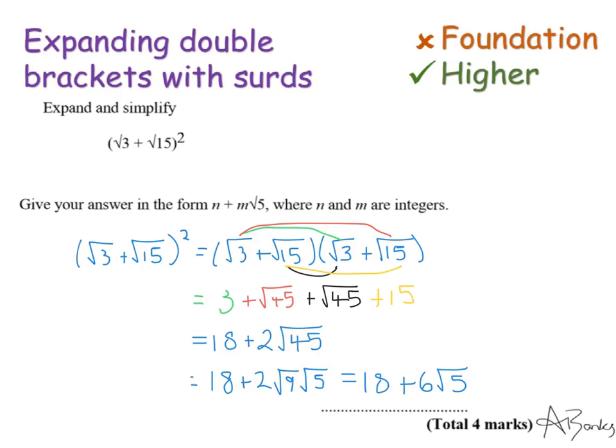If you're not sure what I've done in this step here, then I recommend you watch my video on simplifying surds, because that's the method I've used here to get from 2 root 45 to 6 root 5.